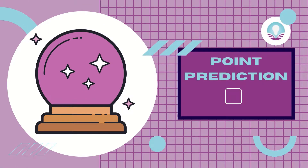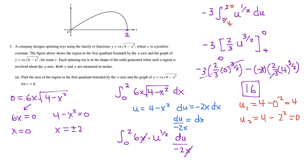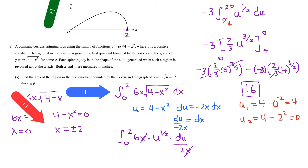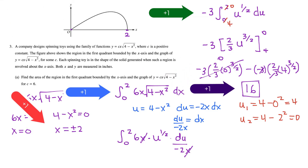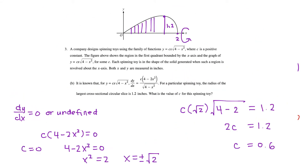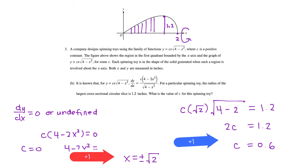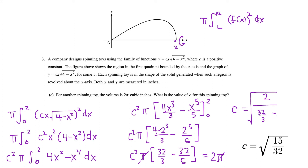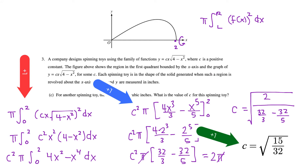Here's a best guess at how the 9 points are distributed: Part (a) — 1 point for correct bounds of 0 and 2, 1 point for setting up the integral correctly, 1 point for correct u-substitution with coefficient of −3, and 1 point for the correct answer of 16. Part (b) — 1 point for the critical value of √2, and 1 point for c = 0.6. Part (c) — 1 point for correct integral setup, 1 point for the antiderivative, and 1 point for the correct value of c.